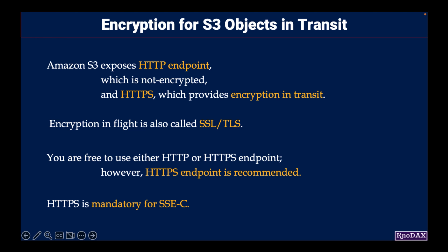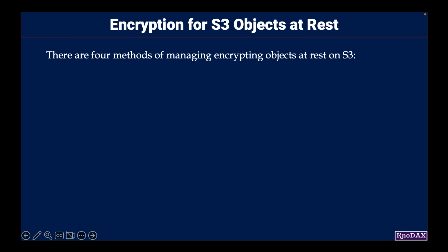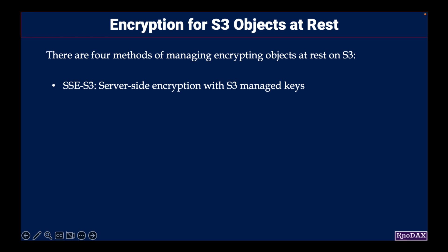When it comes to encryption at rest on S3, there are four methods of encrypting objects at rest. The first is SSE-S3 — server-side encryption with Amazon S3 managed keys. S3 objects are encrypted using keys that are handled and managed by S3.